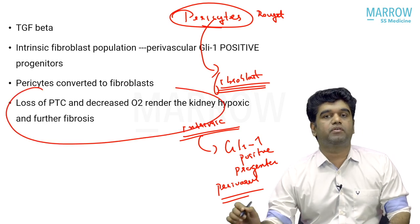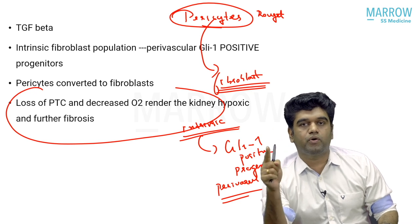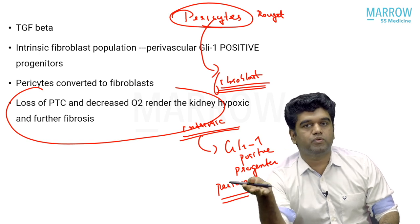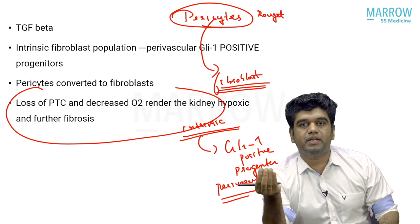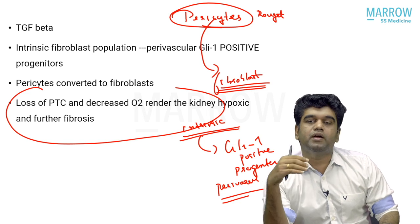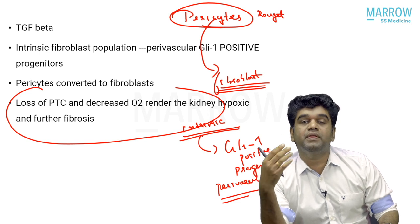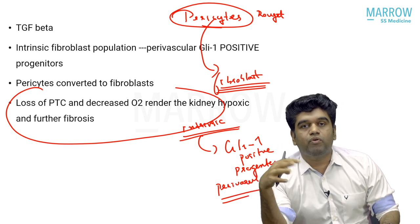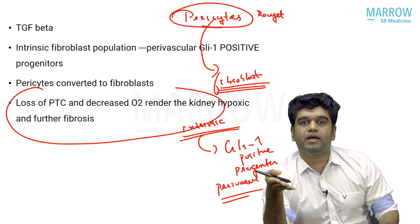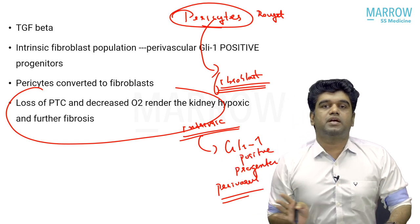Hypoxia is an important part of this process. The key three points to remember: first, TGF-beta is the key pathogenic fibrogenic cytokine. Second, fibroblasts come both intrinsically from GLI-1 positive perivascular progenitors and from conversion of pericytes. Third, the process perpetuates because loss of peritubular capillaries leads to further hypoxia, which stimulates further fibrosis. This is the pathogenesis of CTID in a nutshell.